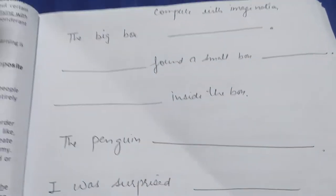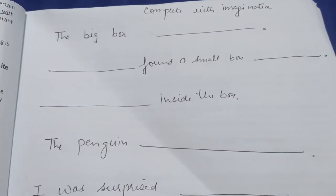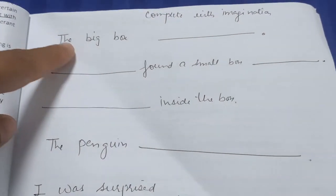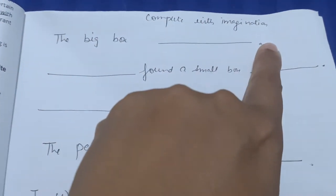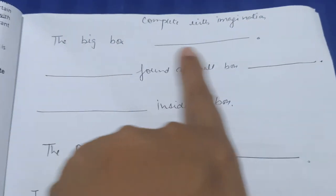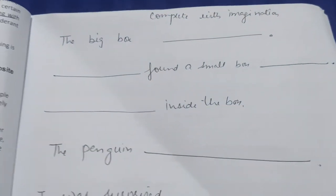Now this is what I was talking about: complete with imagination. I've just written three words—'the big box,' 'empty'—she has to complete the sentence. There's no limitation on any word or idea, anything she wants to write.